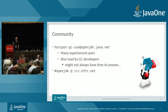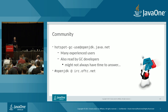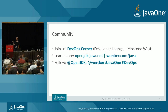Finally, the community: if you want to engage with GC developers and performance experts, sign up to hotspot-gc-use on openjdk.java.net. Thank you to those who help newcomers analyze logs — the GC developers also read this list. You can also join the OpenJDK IRC channel on irc.oftc.net. At JavaOne, stop by the Oracle Developer Lounge in Moscone West — I'm usually in the DevOps corner. Learn more at openjdk.java.net or oracle.com/java. On Twitter, follow @OpenJDK or @OracleJavaOne. Thank you!